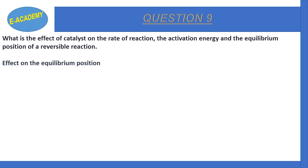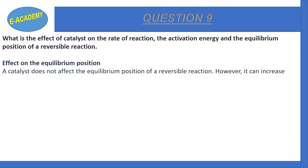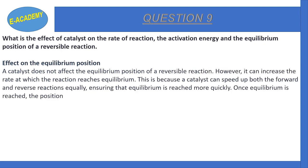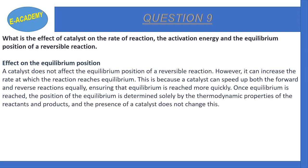Now we will discuss the effect on equilibrium position. A catalyst does not affect the equilibrium position of a reversible reaction. However, it can increase the rate of reaction. This is because a catalyst speeds up both the forward and reverse reactions equally, ensuring that equilibrium is reached more quickly.